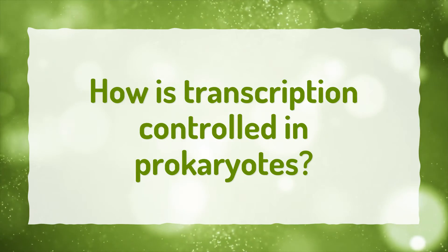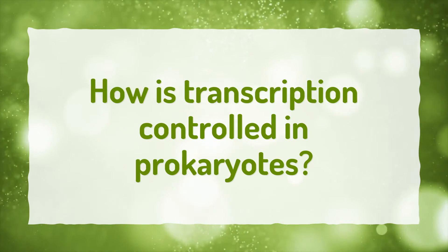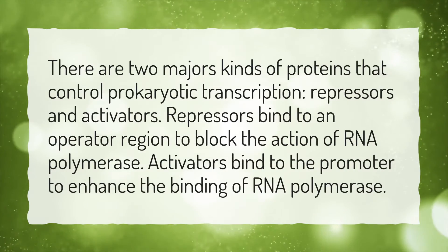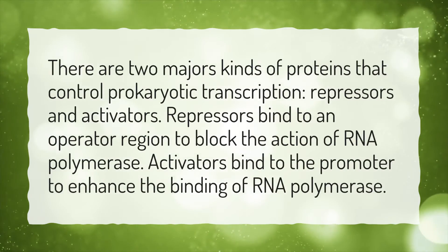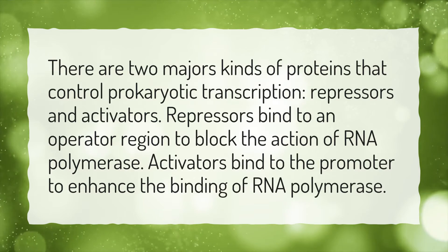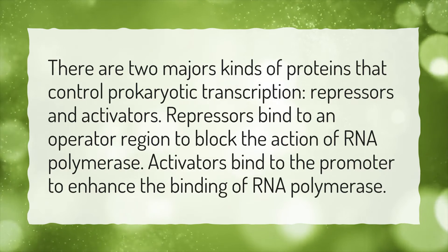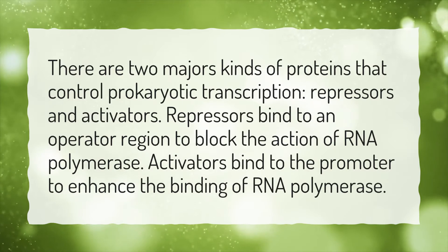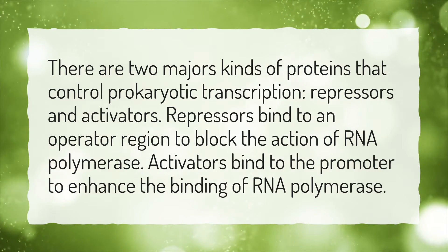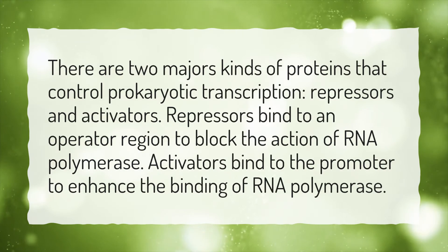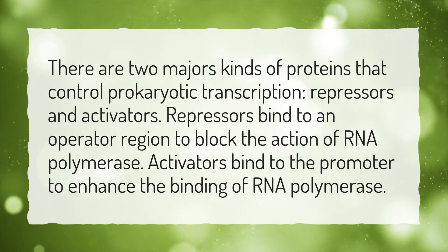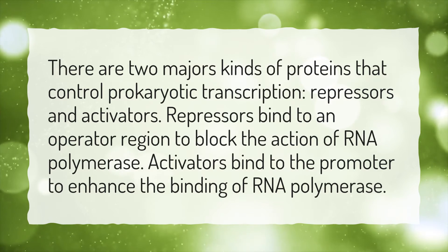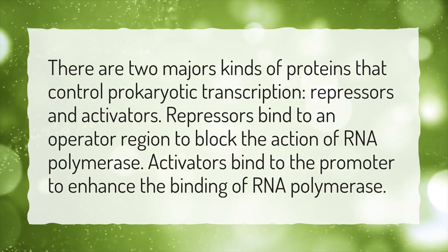How is transcription controlled in prokaryotes? There are two major kinds of proteins that control prokaryotic transcription: repressors and activators. Repressors bind to an operator region to block the action of RNA polymerase. Activators bind to the promoter to enhance the binding of RNA polymerase.